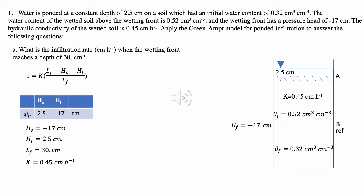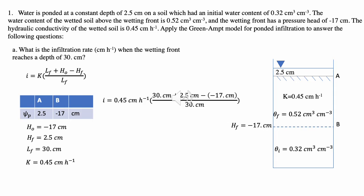Now we're ready to plug all of those values into our equation. So i equals 0.45 centimeters per hour, times parentheses 30 centimeters plus 2.5 centimeters minus negative 17 centimeters, all over 30 centimeters. Accounting for only two significant figures in our final answer, we get 0.74 centimeters per hour as the infiltration rate when the wetting front reaches a depth of 30 centimeters.